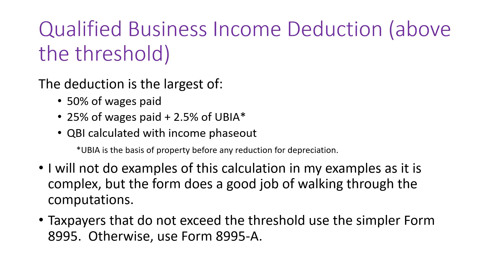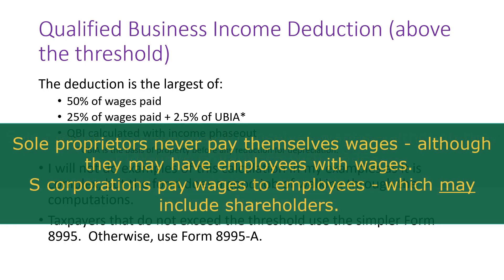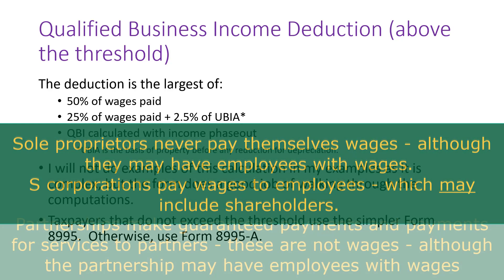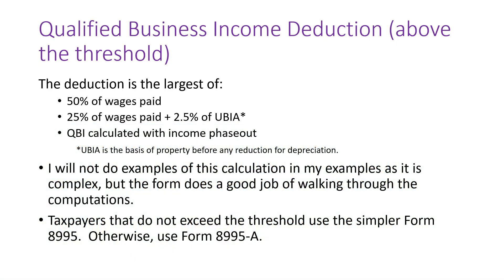A few things to note: the wages paid are wages the entity paid to its employees. If you are a sole proprietor with no employees, there are no wages paid — the owner doesn't draw any wages. For an S corporation, W-2 wages paid to anyone, including shareholders, count as wages paid. For a partnership, only W-2 wages paid to employees count — guaranteed payments or payments to partners for services are not included. This gives S corporations a slight advantage on the wages component.